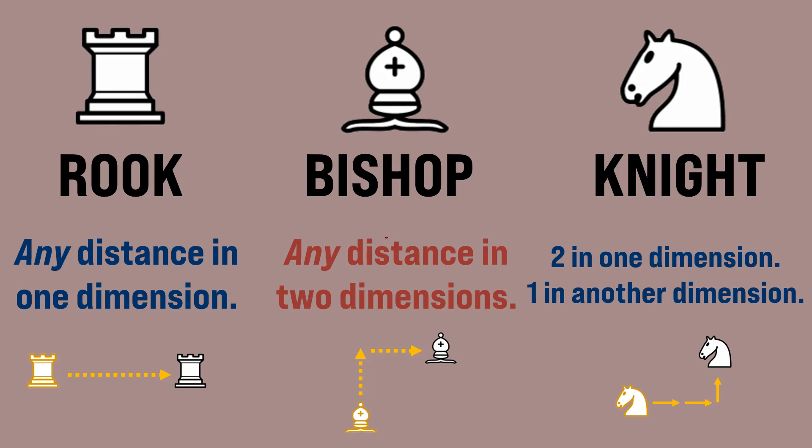The rook has the simplest form of movement. It moves any distance in one single dimension.